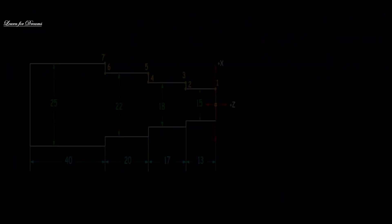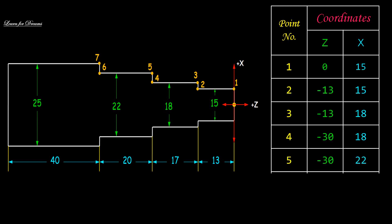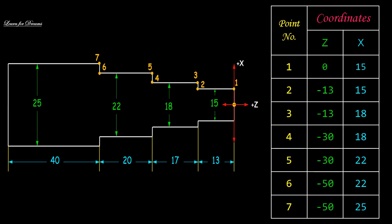Now let's find out the coordinates for each point. For point 1, the coordinates are (0, 15) - for the vertical coordinate we consider the entire diameter. For point 2, coordinates are (-13, 15). For point 3, coordinates are (-13, 18). For point 4, it is (-30, 18). For point 5, it is (-30, 22). For point 6, it is (-50, 22) and for point 7, it is (-50, 25).